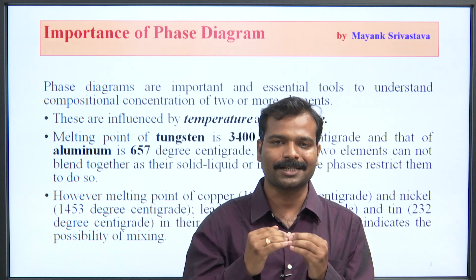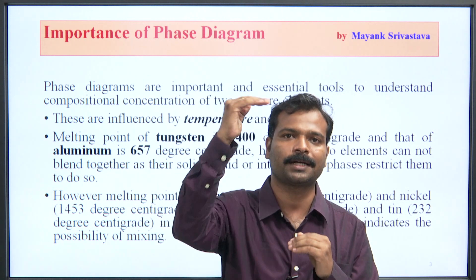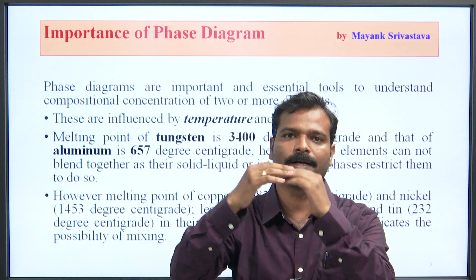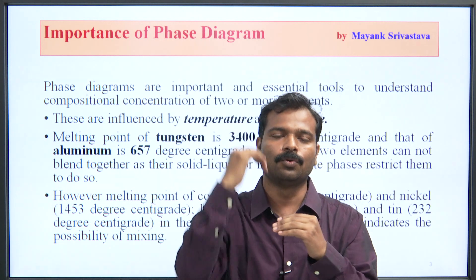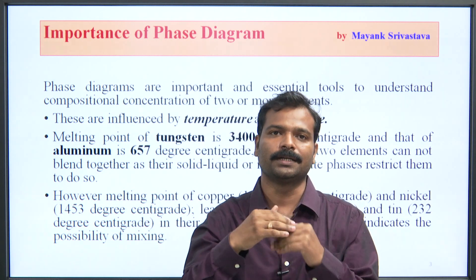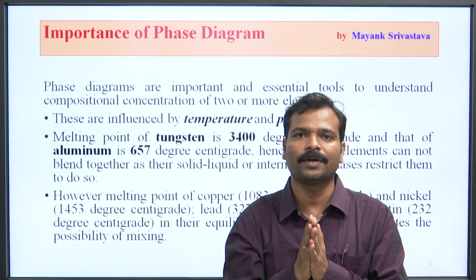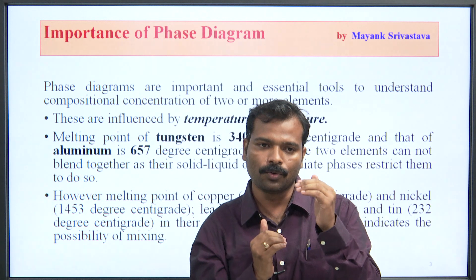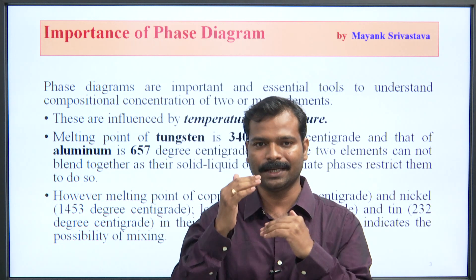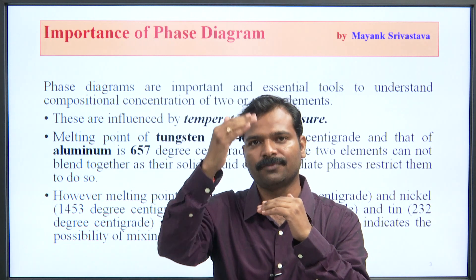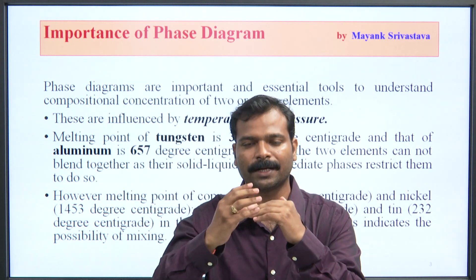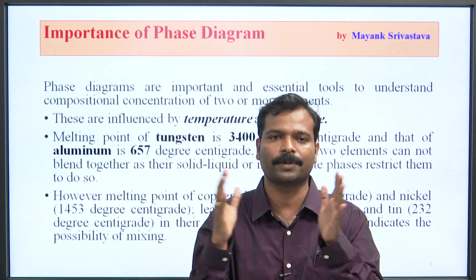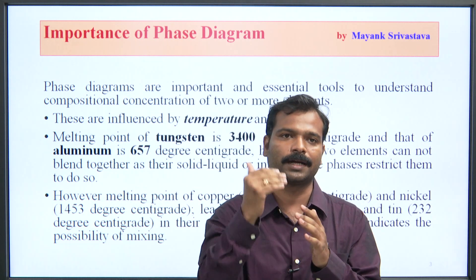This means that it is a drastic change in both temperatures — Aluminium is so low and Tungsten is so high. Here one melts but the other does not melt, so where will it be mixed? So you need both to blend together. As the solid, liquid, and intermediate phases restrict them to do so. The two phases are not the same — so if it is in liquid, then it is not at intermediate phase. This restricts the blend and mix. So this is an important term before reading the phase diagram.